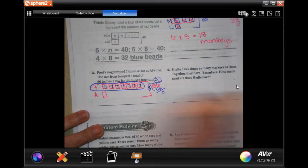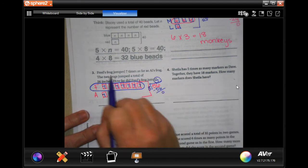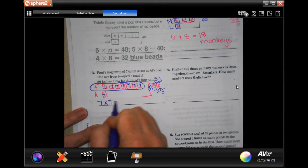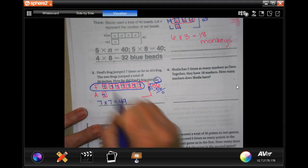That means that each one of these boxes is worth seven. It wants to know how far Fred's frog jumped. One, two, three, four, five, six, seven times seven because each one of these boxes is worth seven. That is 49 and it's being measured in inches.